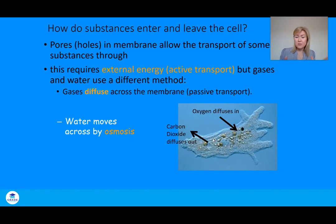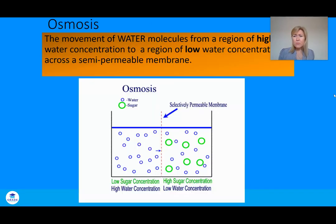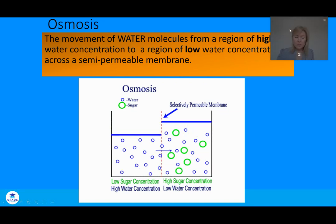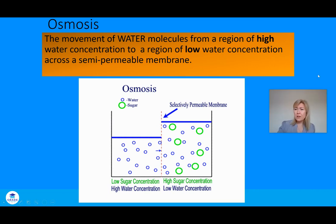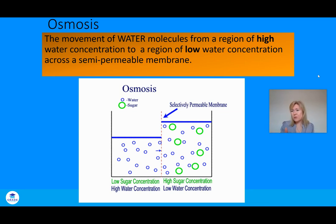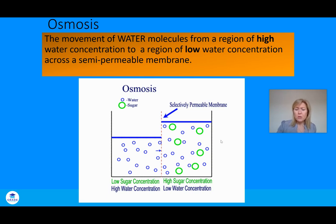Osmosis is an important definition to get right in your exams — leaving out the word 'water' can really cause confusion. The definition: the movement of water molecules from a region of high concentration to a region of low concentration across a semi-permeable membrane. That semi-permeable membrane is the cell membrane. An animation shows water moving across the semi-permeable membrane — the larger green circles represent sugar.